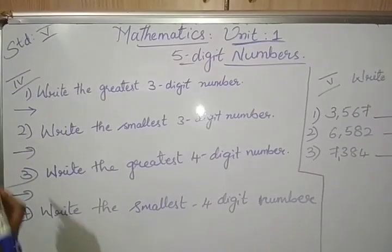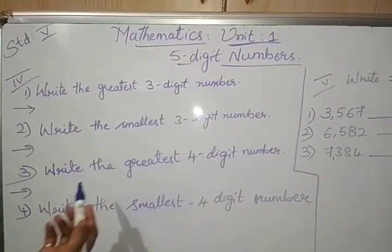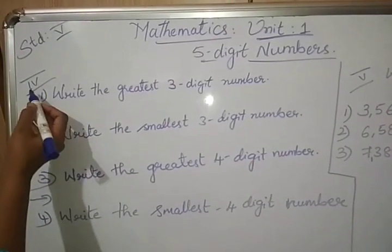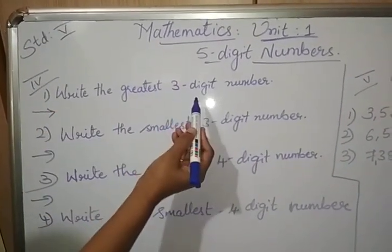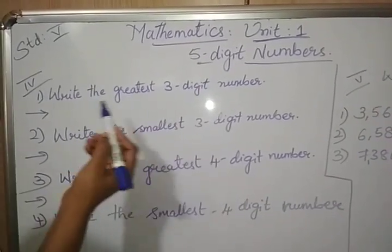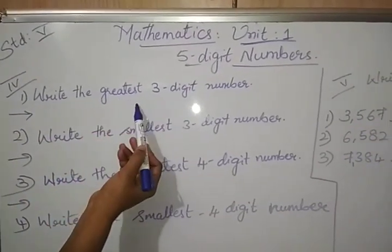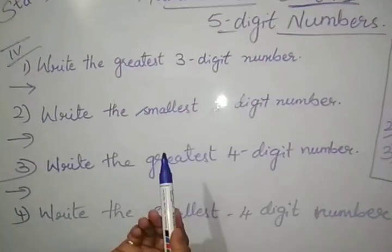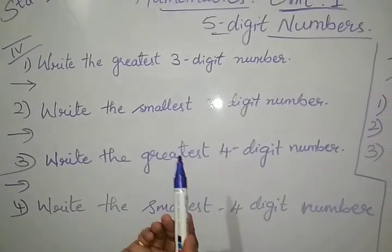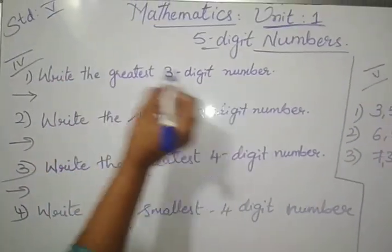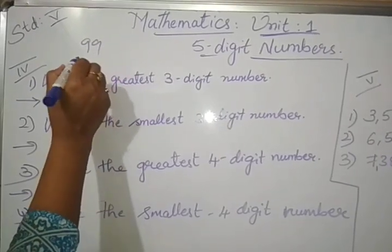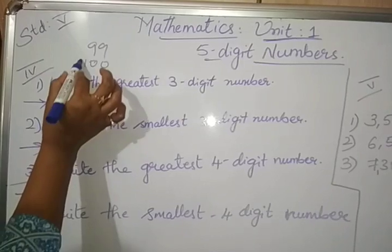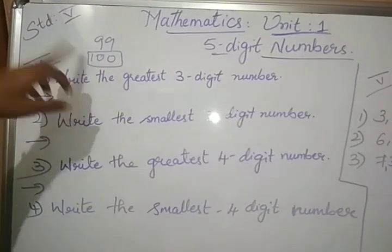We will go for Roman 4, in revision exercise. Answer the following, first one, write the greatest 3-digit number. 2-digit number, last 2-digit number is 99, after 99, 100. 100 is unit, tens, hundreds, 3-digit number. This is the smallest one.